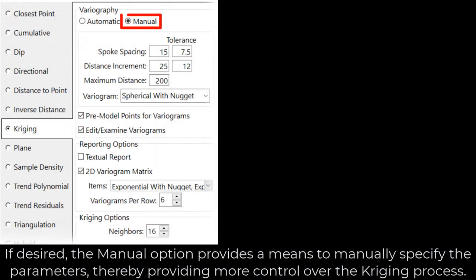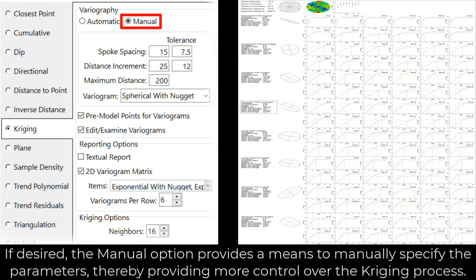If desired, the manual option provides a means to manually specify the parameters, thereby providing more control over the Kriging process.